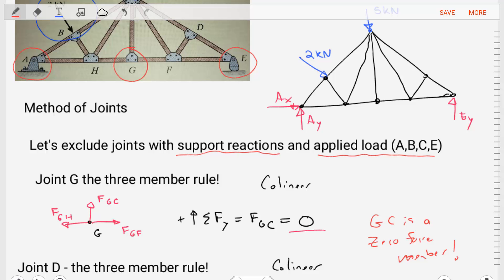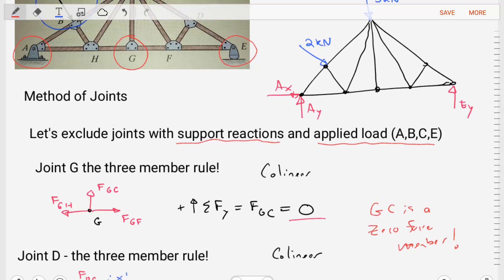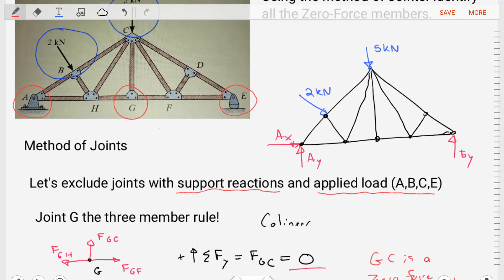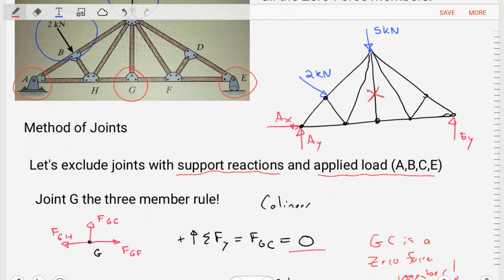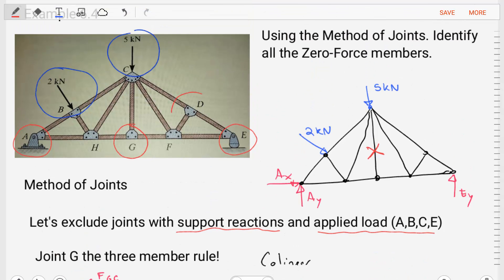Simple as that. So now we've identified our first zero force member in this structure. And then let's go ahead and note that on our free body diagram here that this member GC, that is a zero force member. Let's move on to another joint. The next joint we'll do here is joint D.